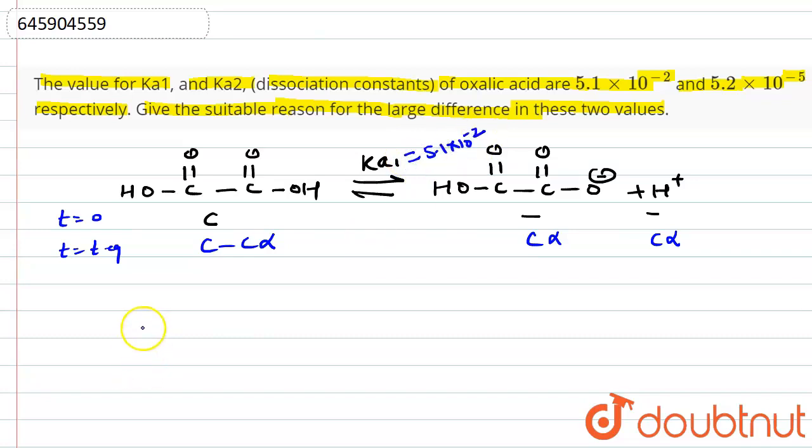This value Ka1 is given as 5.1 × 10^-2. After that, this anion will give one more H+ ion in that solution.